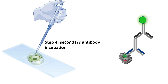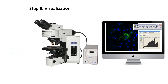Next, secondary antibodies are added — this process must be done in the dark. The secondary antibodies recognize the Fc region of the primary antibody. If the secondary antibody is detected, that means the primary antibody is there, and therefore the epitope is present. This relay of detection tells us about the presence of an epitope in a sample. Finally, the signal is detected using a fluorescence microscope, revealing protein localization, cellular architecture, protein distribution, and much more.